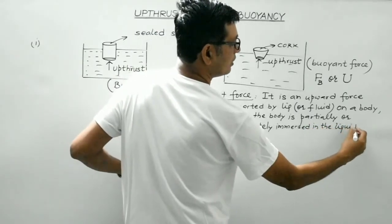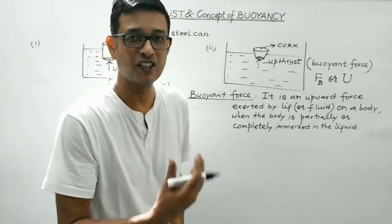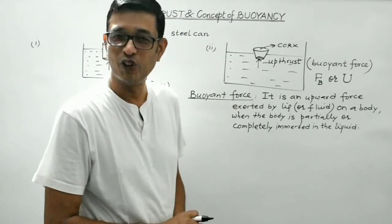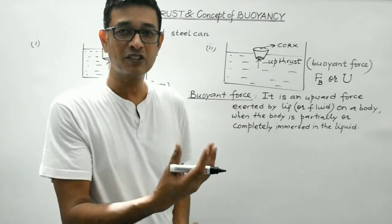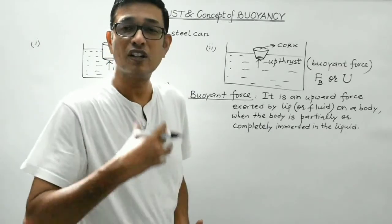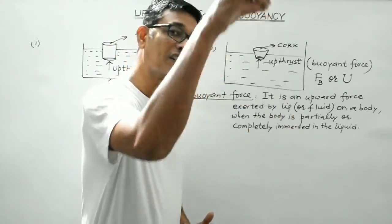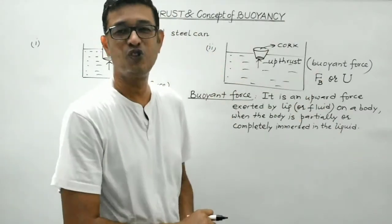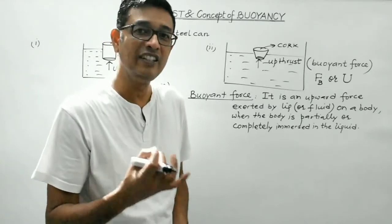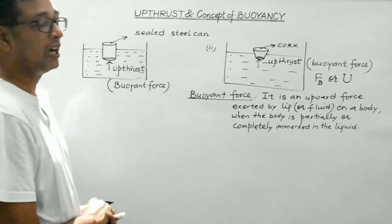This is the definition of buoyant force or up thrust. Upward thrust is the force acting on the surface normally. It is the upward force exerted by a liquid or gas or a fluid on the body when it is partially or completely immersed in that fluid. That is known as buoyant force or up thrust. Its SI unit is Newton.